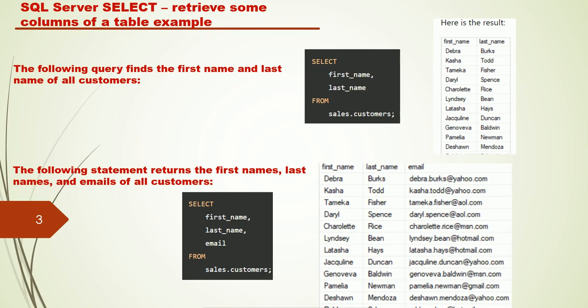The SQL Server SELECT statement can retrieve some columns of a table. For example, the following query finds the first name and the last name of the customer. If you want to retrieve information regarding first name and last name, you write: SELECT first_name, last_name FROM sales.customer. When you execute this query, you will retrieve the first name and last name of all customers.